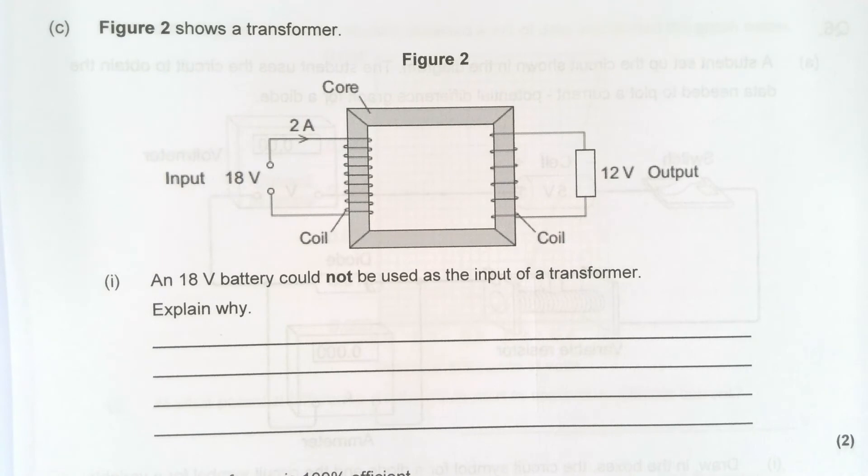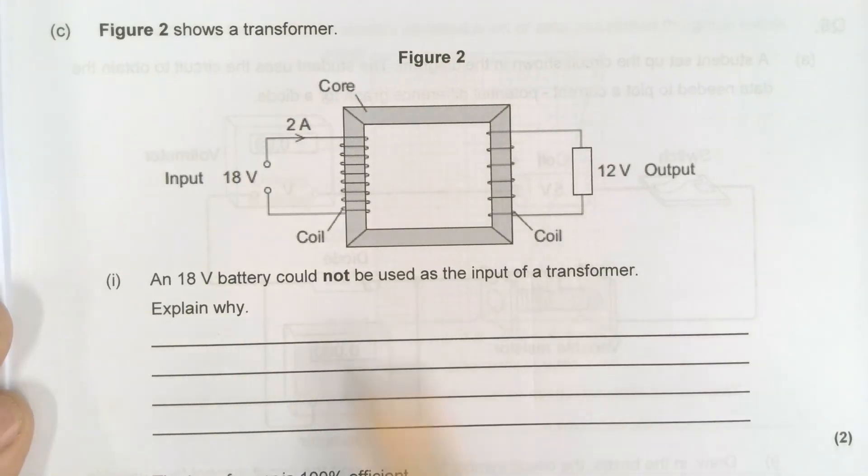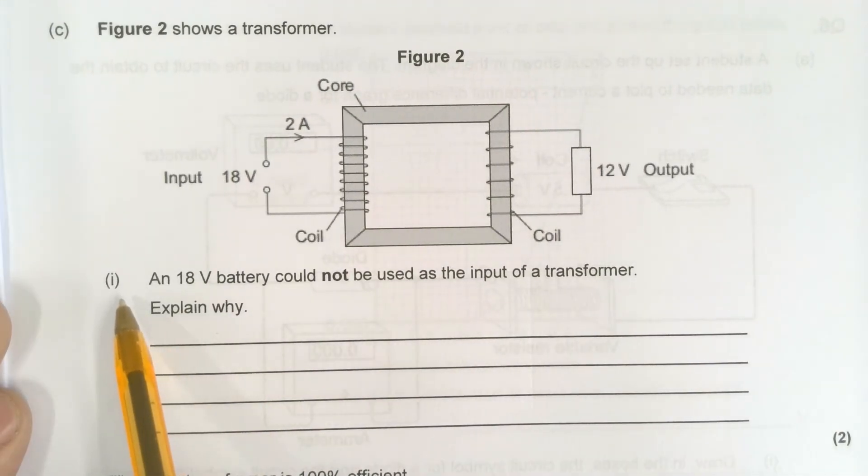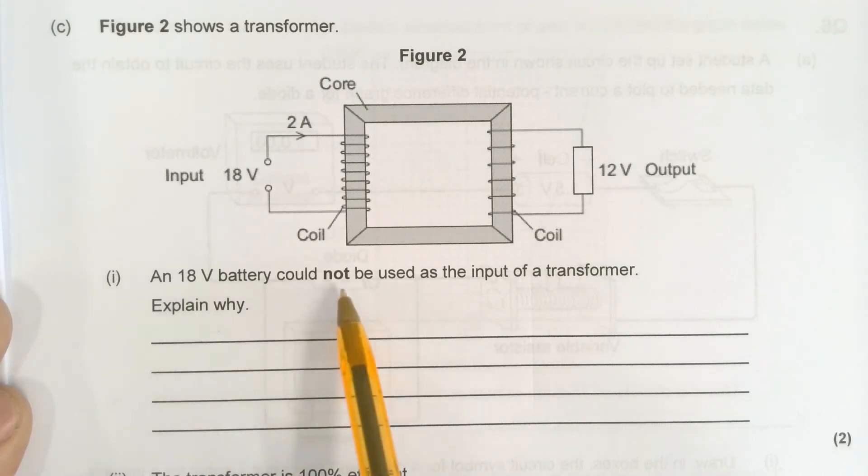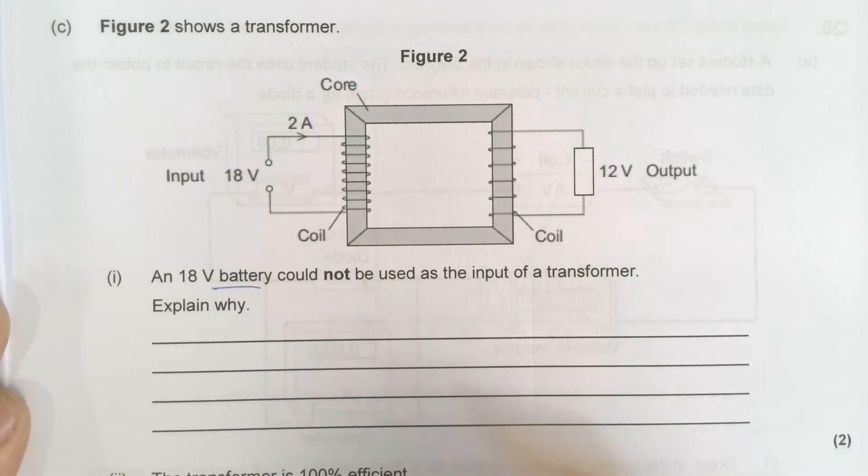Figure 2 shows a transformer. You may not have done transformers yet. Don't worry if you haven't. I'll go through the answer anyway. I don't think they come out in paper 1 anyway. An 18 volt battery could not be used as the input of a transformer. Explain why. Well, we'll keep it and it's worth 2 marks. So I'm going to put 2 bullet points.